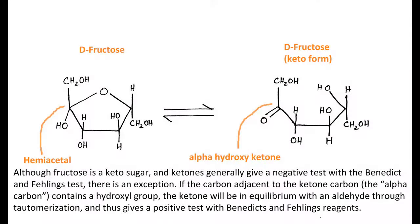Fructose is a ketose monosaccharide and is a non-reducing sugar. However, it also gives a positive Fehling's test because it is an alpha-hydroxyketone and is converted to the aldehyde-containing monosaccharides glucose and mannose by the base present in Fehling's reagent.